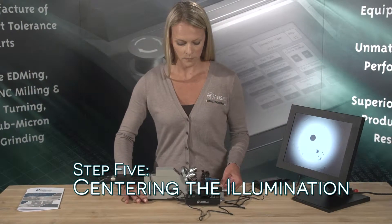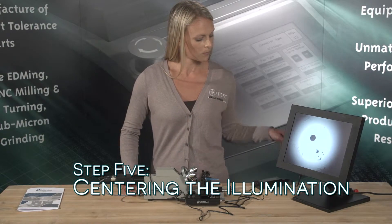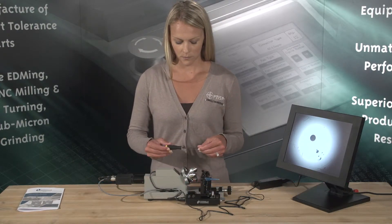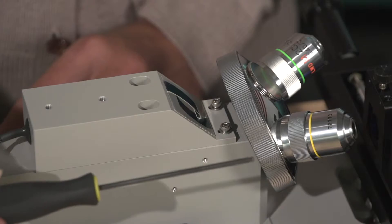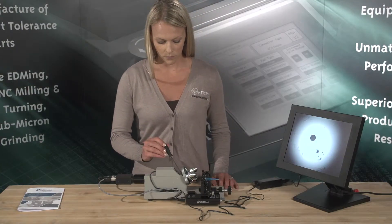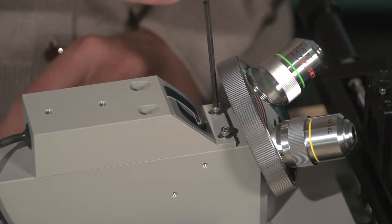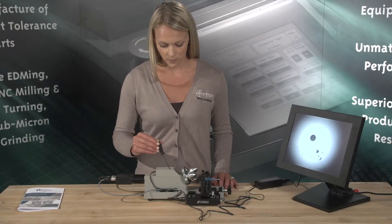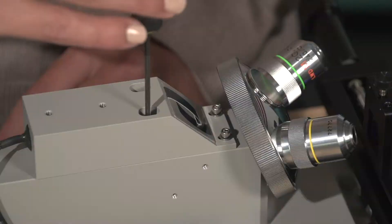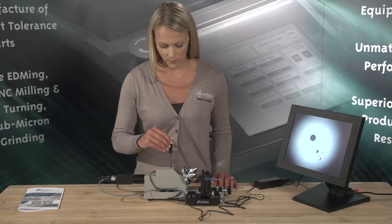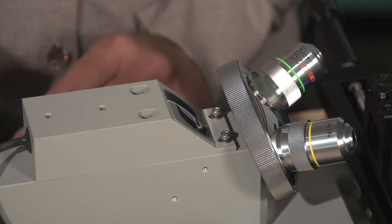Step 5: Centering the Illumination. All scopes are set up from the factory, but replacing lamps or periodic cleaning of the beam splitter may require the operator to re-center the illumination. Centering the illumination of the DE2503 is critical in order to maximize performance of the microscope. To re-adjust the illumination position, do the following.